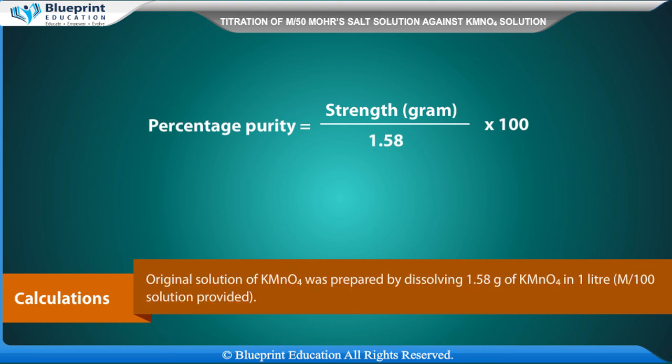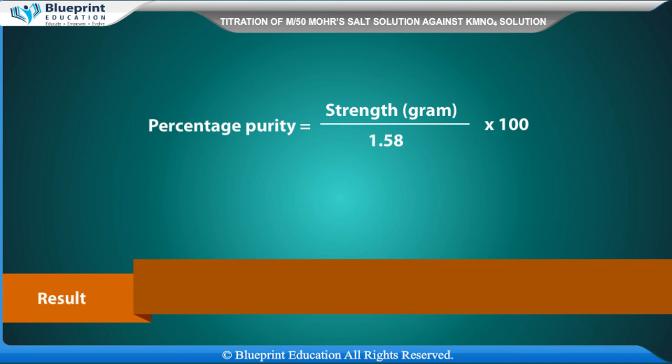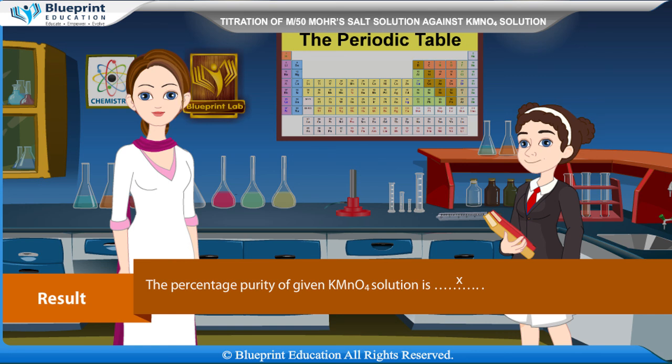The original solution of KMnO4 was prepared by dissolving 1.58 grams of KMnO4 in 1 litre, giving an M/100 solution as provided. Result: The percentage purity of the given KMnO4 solution is X. Thank you, ma'am — this experiment has made the concept very easy to understand.